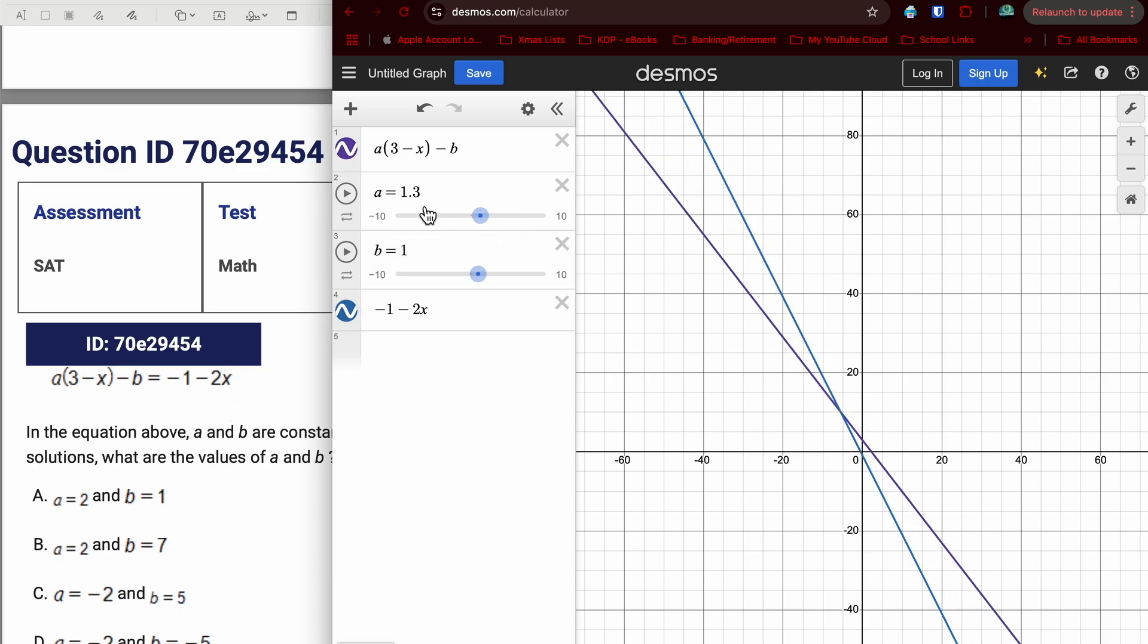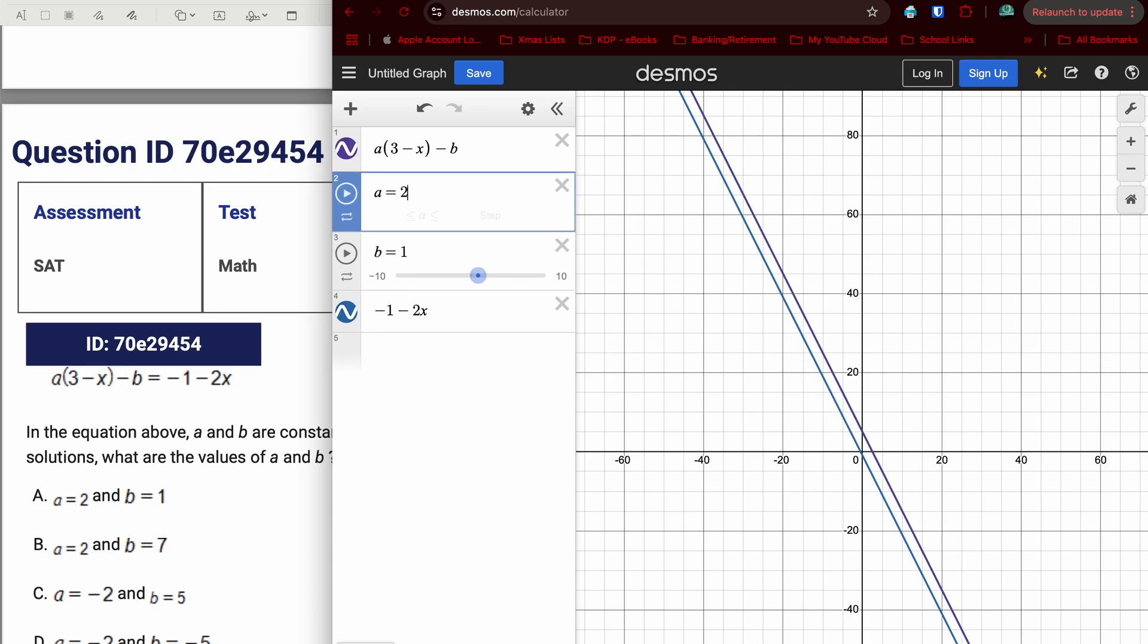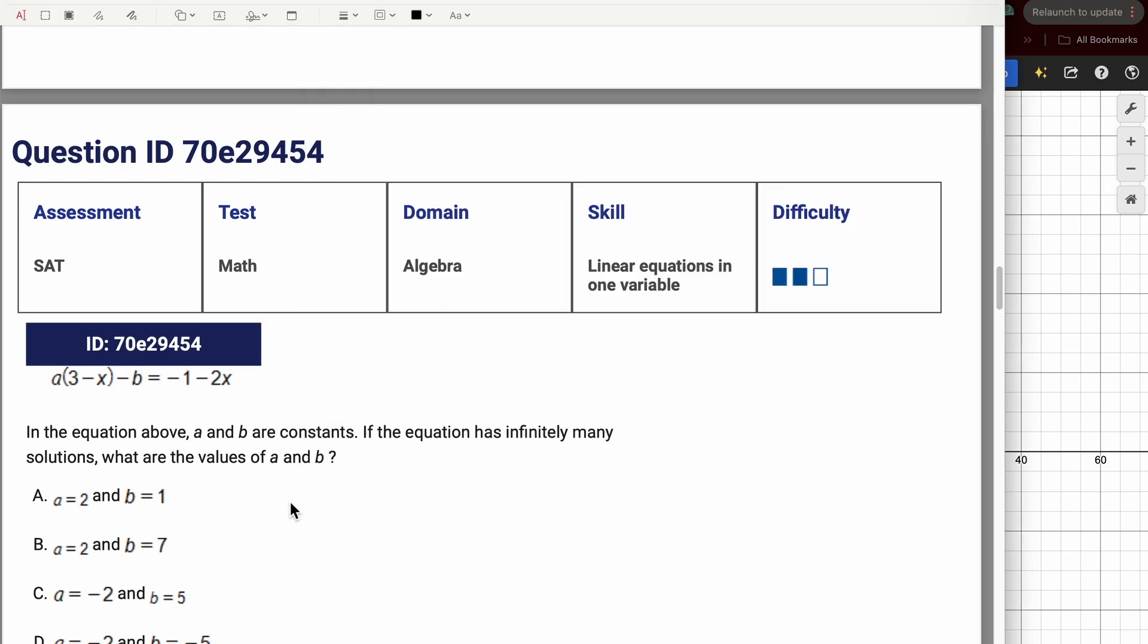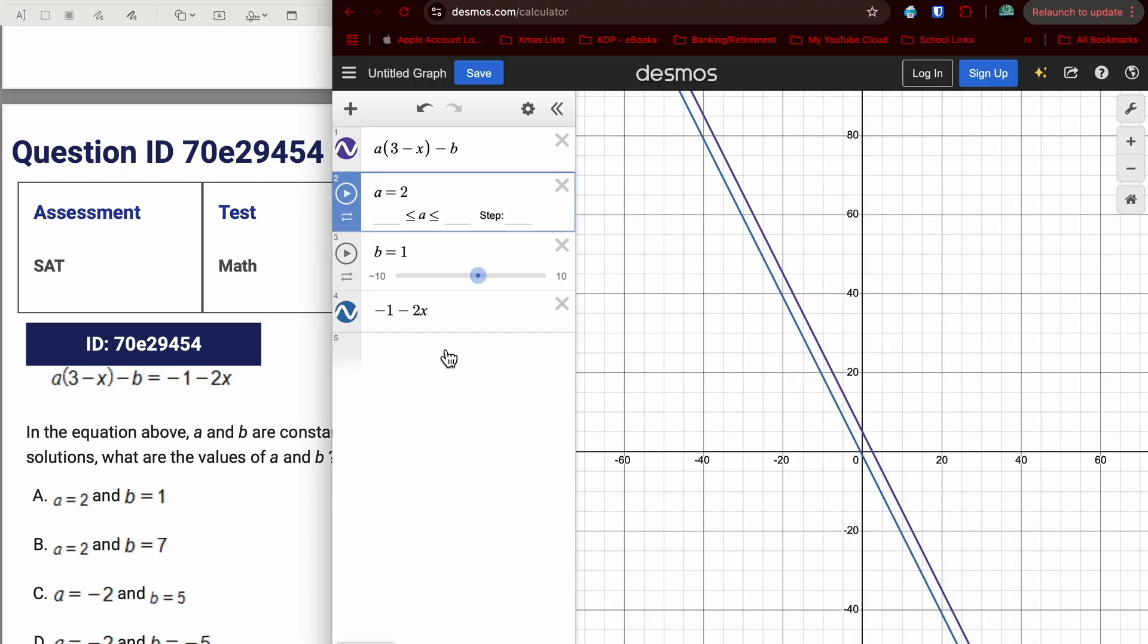So again, instead of playing the guessing game, it's multiple choice, plug in 2 for A and B for 1, and we can see they're parallel. So this would be a no solution. But the question wants infinitely many solutions. So I've got to get it so that the lines are on top of each other. So A was not the right answer.